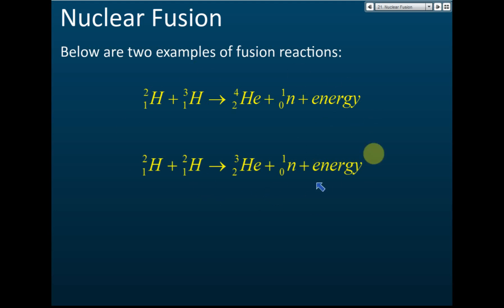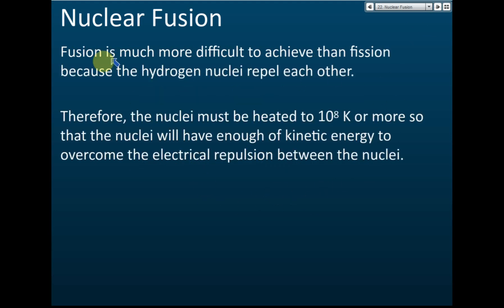Fusion is much more difficult to achieve than fission because the hydrogen nuclei repel each other. It occurs at very high pressure and very high temperature. Usually we do not use it because it's difficult to be controlled and difficult to be achieved.